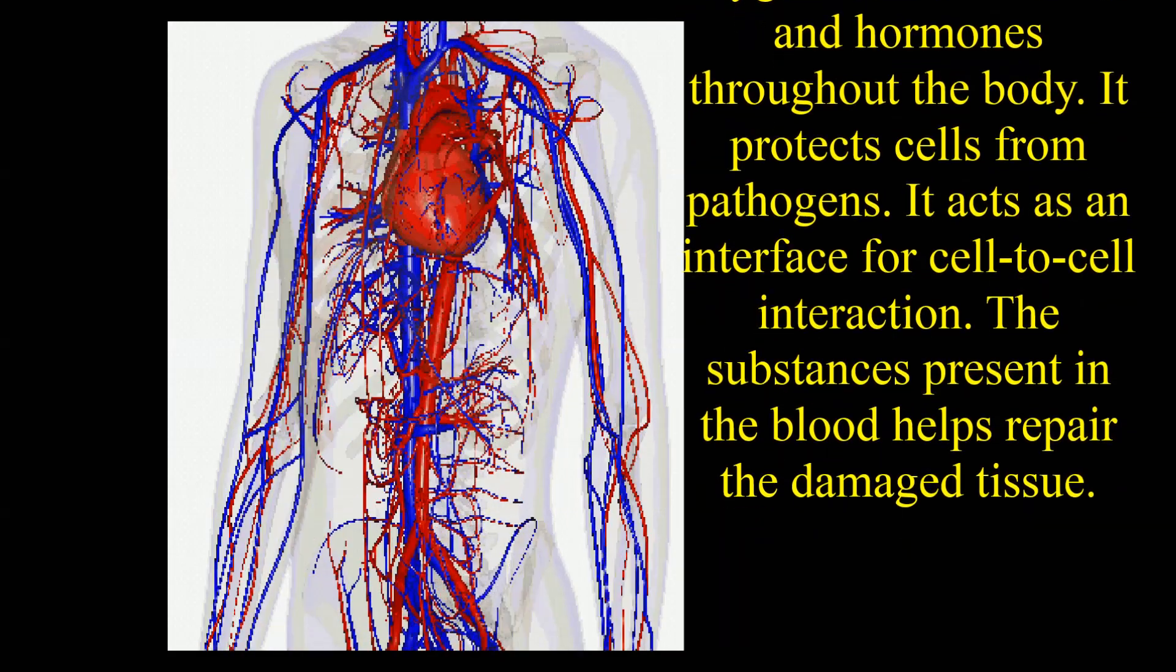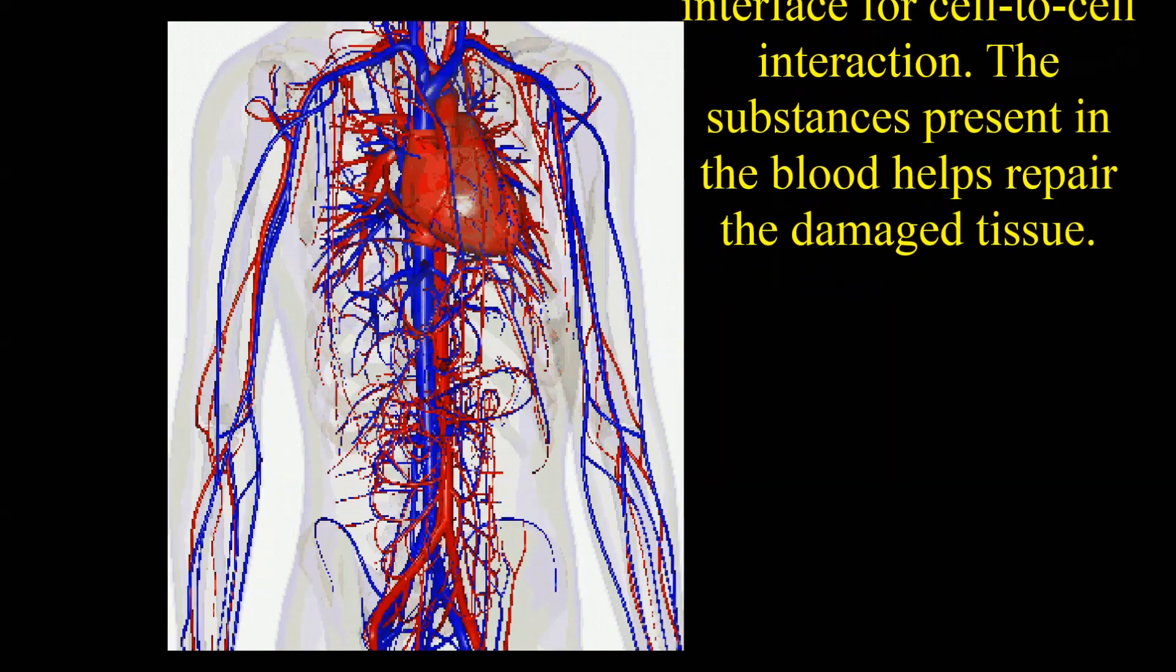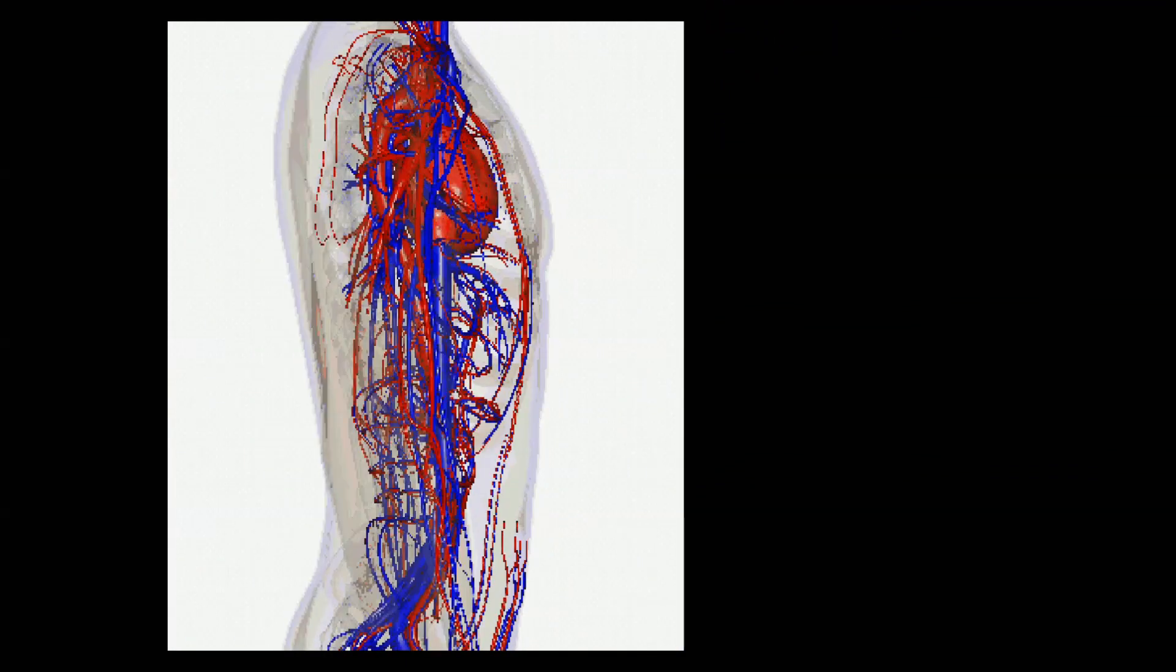It protects cells from pathogens, acts as an interface for cell-to-cell interaction, and the substances present in the blood help repair damaged tissue.